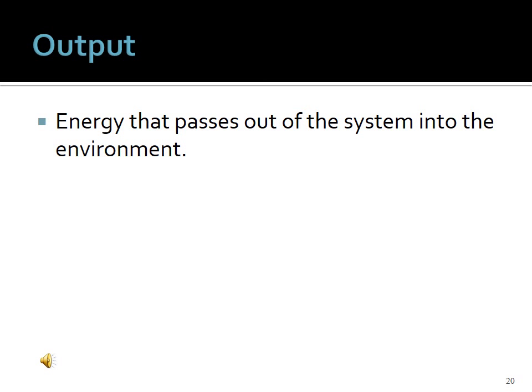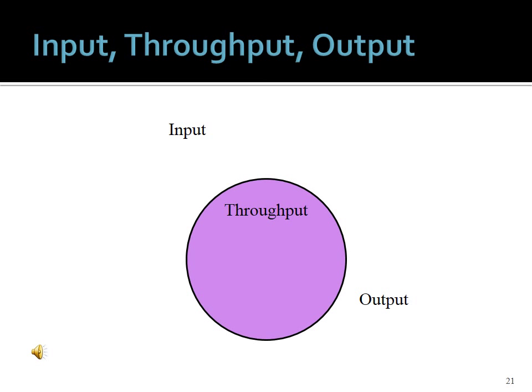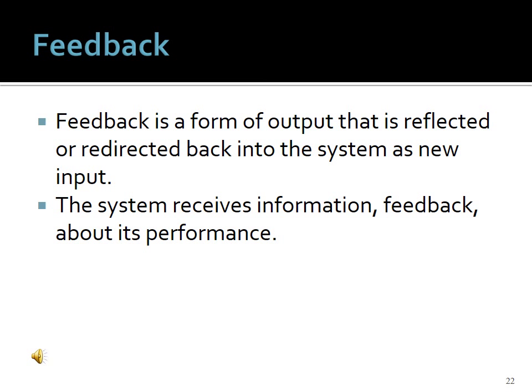Output is the energy that passes out of the system into the environment. To summarize: input is the energy that passes into the system through the boundary; throughput is that energy as it is used, absorbed, and transformed by the system; output is that energy as it comes out and interacts with the environment. Feedback is a form of output that is reflected or redirected — bounced off the environment — back into the system as new input. The system receives information about its performance, which is redirected back as new input.